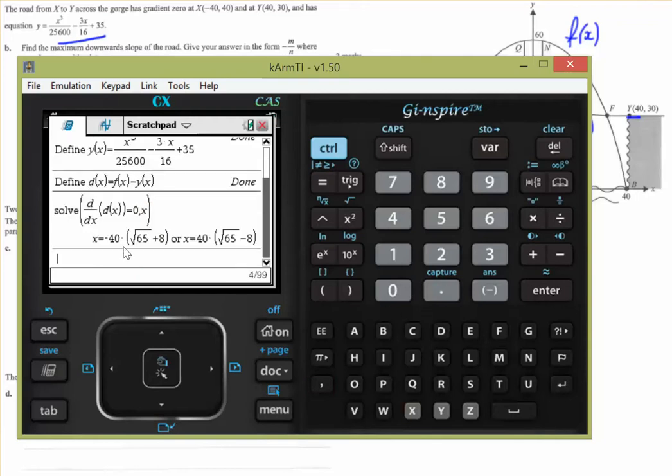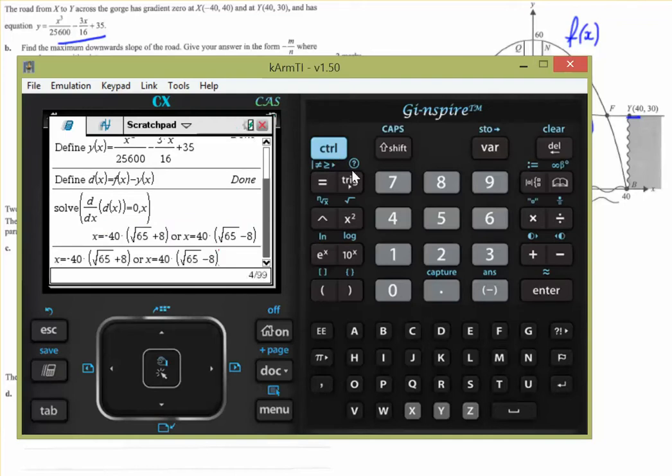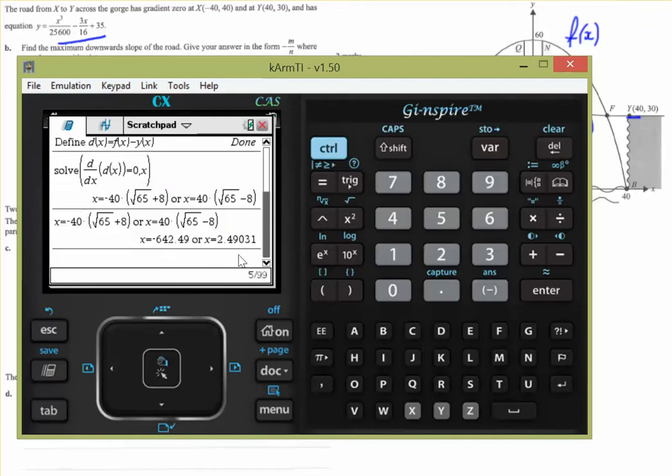Okay, we get two x values. So which one do we consider? Well, negative 40 times some quantity that's positive and bigger than 1 is going to be outside our domain. So this would be the quantity we're concerned with. This x equals 40 times root 65 minus 8. It wants it to two decimal places, the final answer. So let's just get that as a decimal.